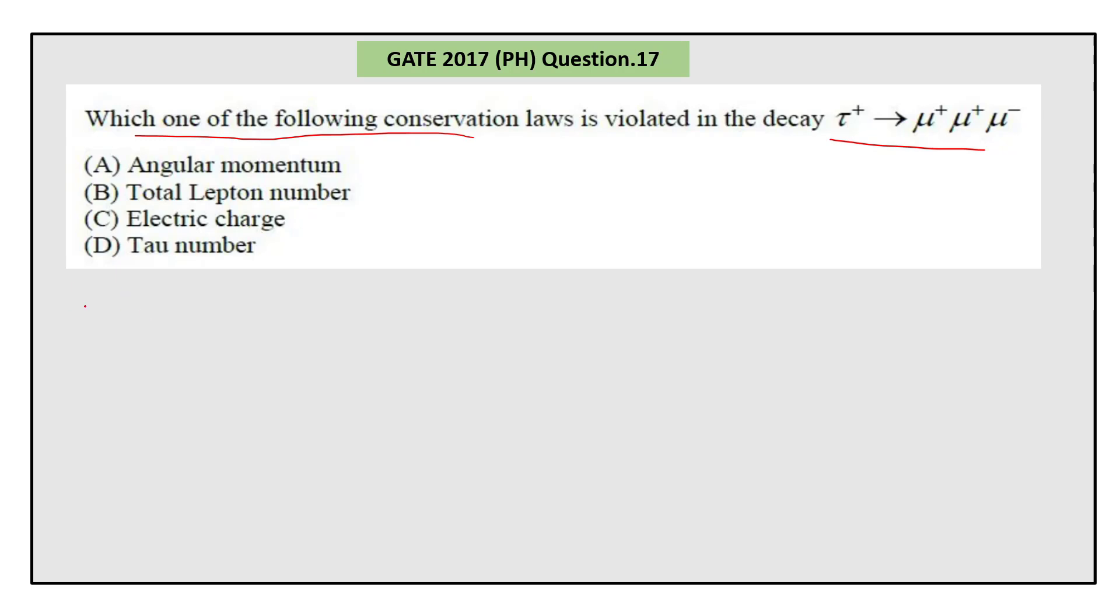Let's analyze this step by step. Tau positive decays to muon positive plus muon positive plus muon negative. For angular momentum, these are leptons, so they are spin-half particles.